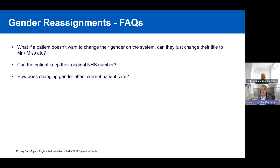Regarding how changing gender affects current patient care: if a patient is currently undergoing treatment at a hospital or other practices and changes their gender midway through a treatment plan, there should be processes in place to prevent impacts to patient care. A hospital should be able to retrace NHS numbers on Spine and pick up facts and transfer information over, and there should be local processes in place.